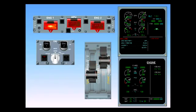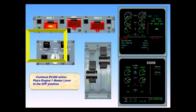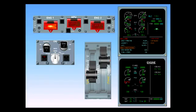Continue ECAM action. Place engine one master lever to the off position. After having switched engine one off, the after engine one shutdown procedure is shown on the EWD. Since the IP and HP valves close and the generator is no longer operating, air bleed and electrical are shown as secondary failures.